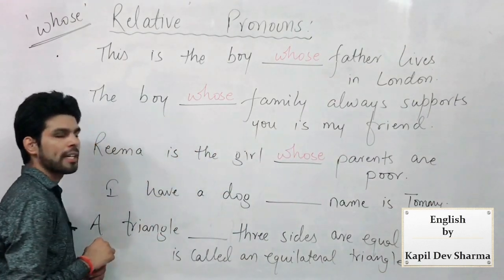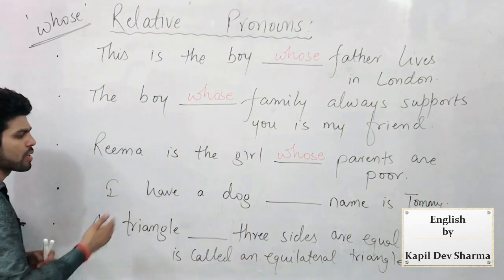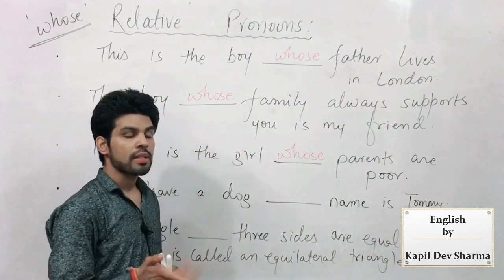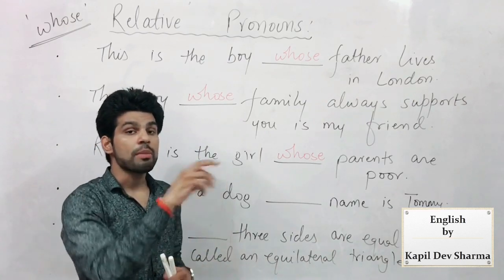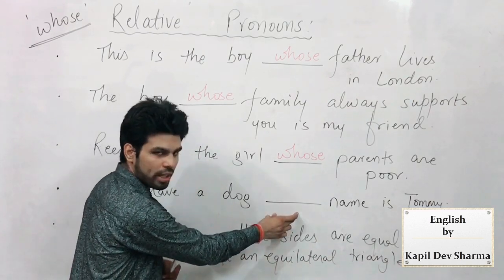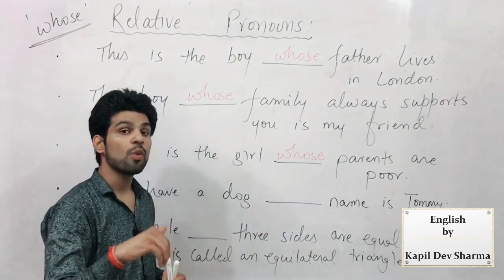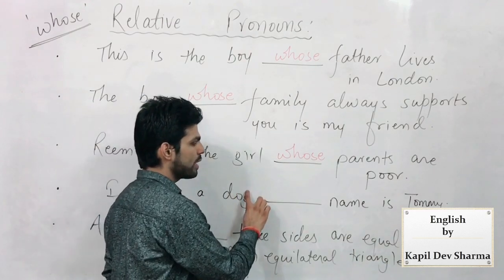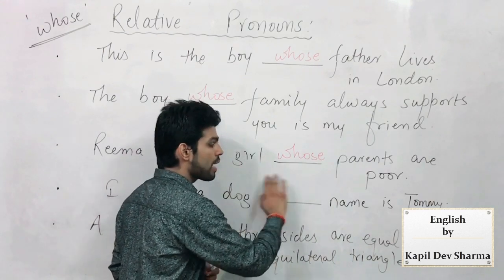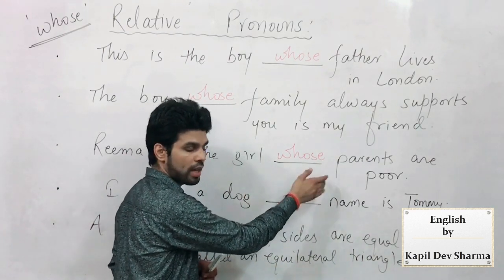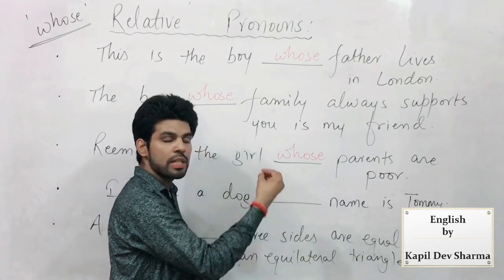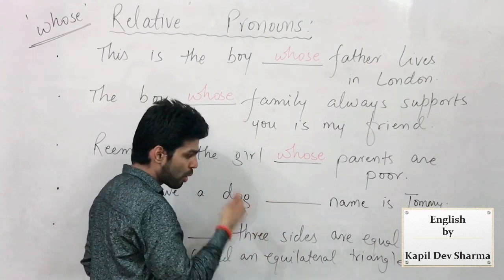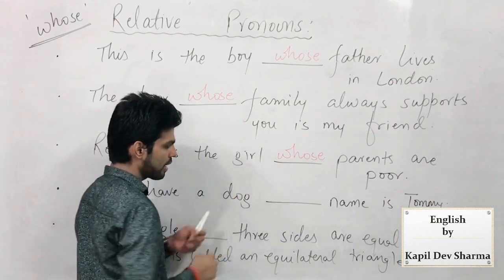Let's see more examples: 'I have a dog ___ name is Tommy.' Jiska naam Tommy bhi hai. 'I have a dog ___ name is Tommy' — for dog, can I put 'who'? 'Who' won't come for dog. 'Whom' also won't come for dog. 'Which' could come for dog but that comes in subject and object context — here I've shown its right, its possession. I repeat — 'uska naam Tommy hai' — something of it is being talked about: its name, its color, its complexion, its height.